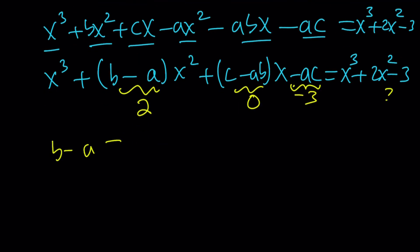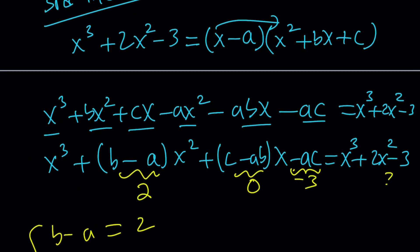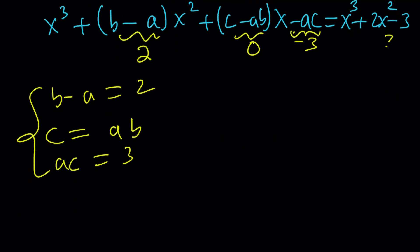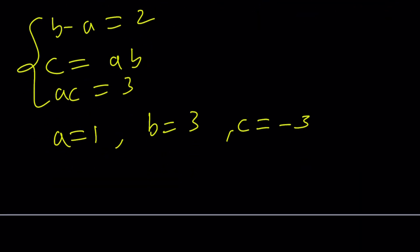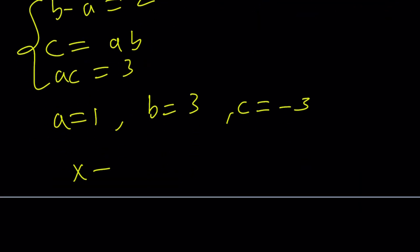So, this gives us b minus a equals 2. I'm just going to say it. c equals ab, and ac is equal to 3. Obviously, 3 variables and 3 equations, you can solve this. And guess what? From here, you're going to get a equals 1, right? And b equals 3, and c equals 3. And guess what? That's going to give you x minus 1 times x squared plus 3x plus 3 equals 0.